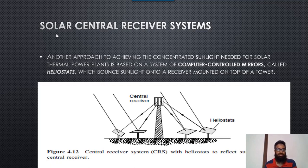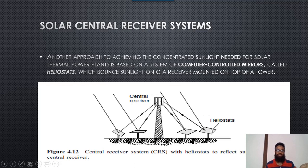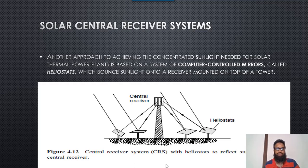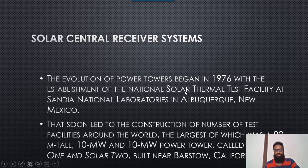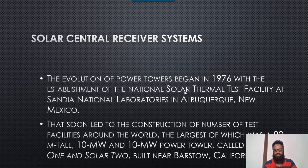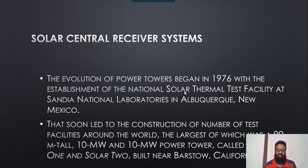Another type of concentrated solar power is the solar central receiver system, which is a tower-based system where the central receiver is on top of a tower. Different mirrors adjust their positions to concentrate light at the top of the tower to produce heat and electricity. The development of the power tower began in 1976 with the establishment of the National Solar Thermal Test Facility at Sandia National Laboratory in New Mexico, which led to construction of test facilities around the world. The largest is 90 meters tall, a 10 megawatt power tower called Solar One and Solar Two, built near California.